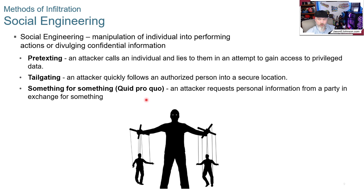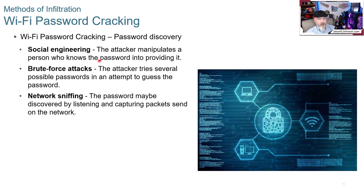Quid pro quo is when an attacker requests personal information in exchange for something — money, Bitcoin, or system access. Wi-Fi password cracking via social engineering manipulates a person who knows the password into providing it. Brute force attacks try several possible passwords to guess the correct one. Network sniffing discovers passwords by capturing packets sent on the network, which is why physical and wireless network access must be locked down — once you have physical port access, a lot of sniffing becomes possible.